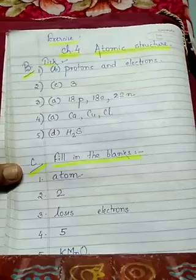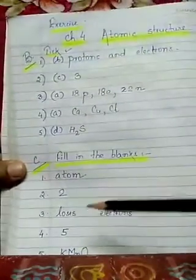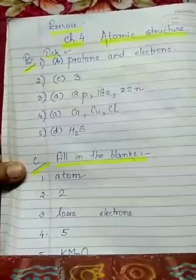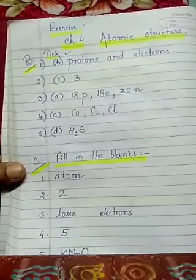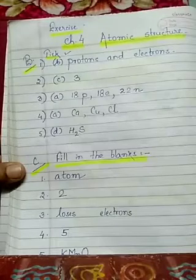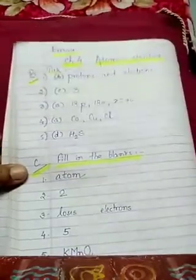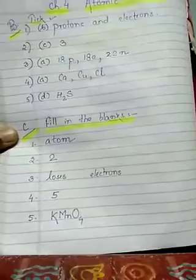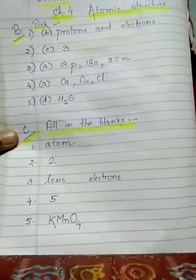A cation is formed when an atom loses 1 or more electrons. Number 4: the valency of metal M in the compound M₂O₅ is 5. The chemical formula of potassium permanganate is KMnO₄.